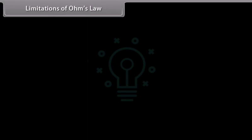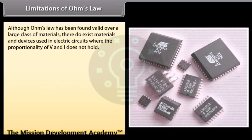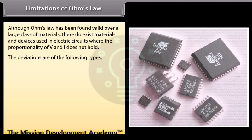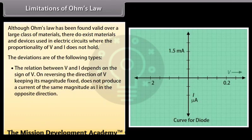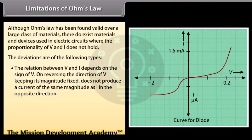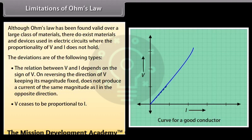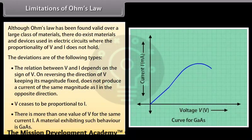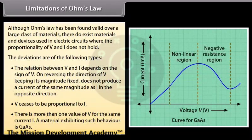Although Ohm's Law has been found valid over a large class of materials, there exist materials and devices where the proportionality of V and I does not hold. The deviations are: the relation between V and I depends on the sign of V; reversing the direction of V does not produce a current of the same magnitude in the opposite direction; V ceases to be proportional to I; and there is more than one value of V for the same current I. A material exhibiting such behaviour is Gallium Arsenide.